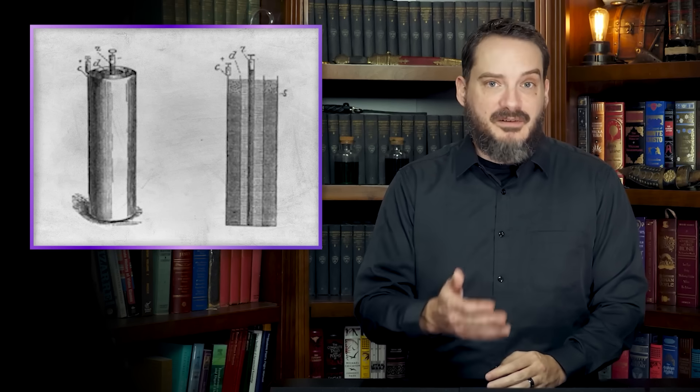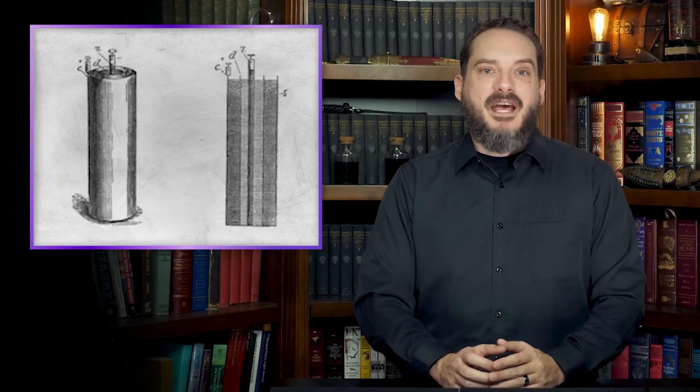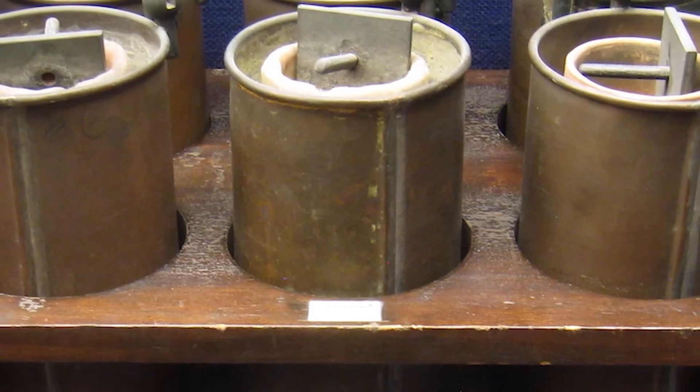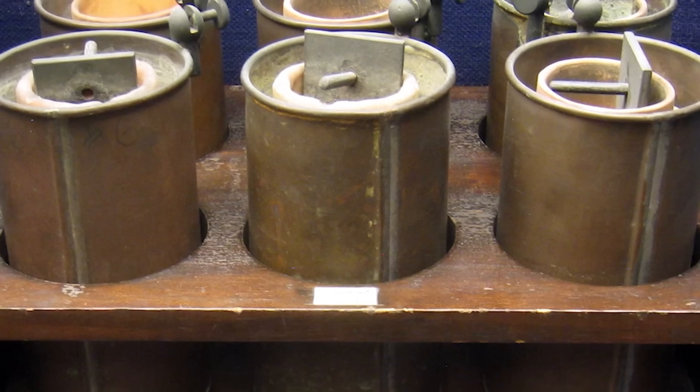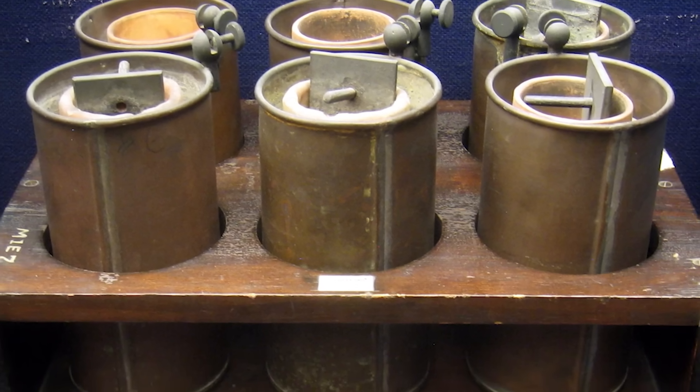The Daniel cell, as well as derivatives like the gravity cell and the bird cell, soon became the standard battery for use in the telegraphic network, and in 1881 was chosen as the basis for defining the volt, the standard unit of electrical potential named in honor of Alessandro Volta. By the modern definition, however, the battery produced a voltage of around 1.1 volts.